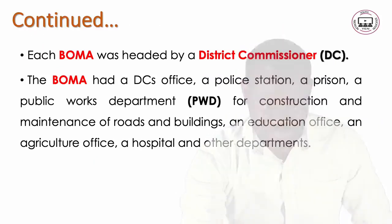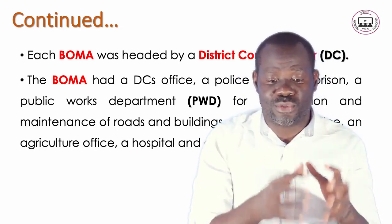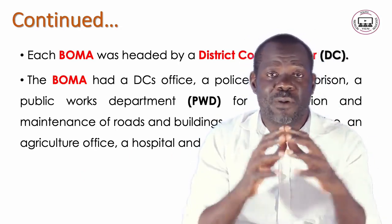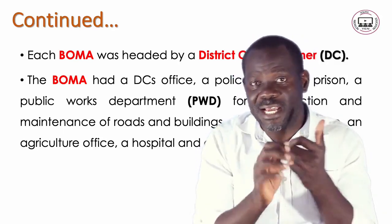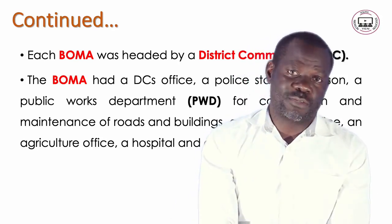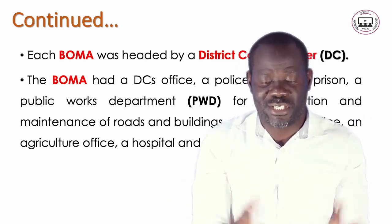Each BOMA was headed by the District Commissioner, the DC. The BOMA had the DC's office, a police station, a prison, a public works department for construction and maintenance of roads and buildings, an education office, an agriculture office, a hospital, and other departments. So each and every district had these government institutions. That is how the colonial government established their power.